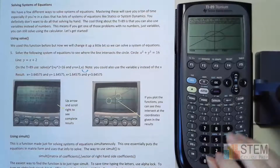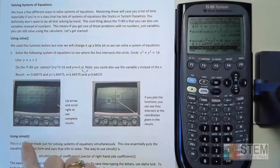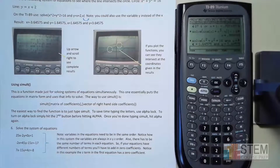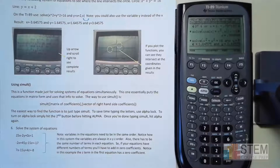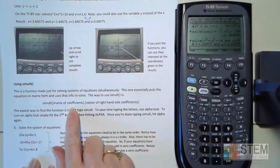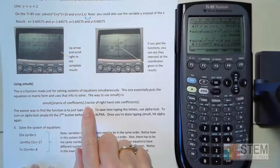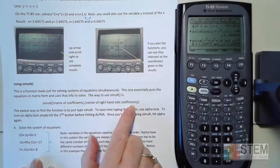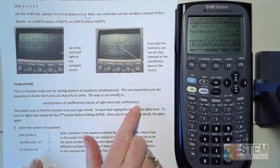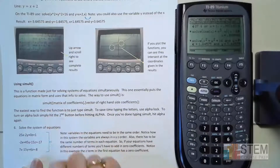Now we have another function we can use — the Simult function. This uses concepts from linear algebra: you put your equations in matrix form and Simult solves the system for you. The format is: simult( [matrix of coefficients], [vector of right-hand side coefficients] ) — both inputs must be in square brackets inside the parentheses. I usually just type it in using alpha lock.